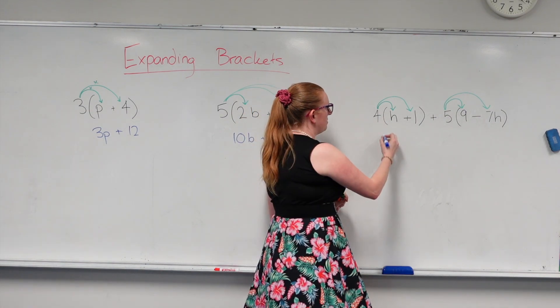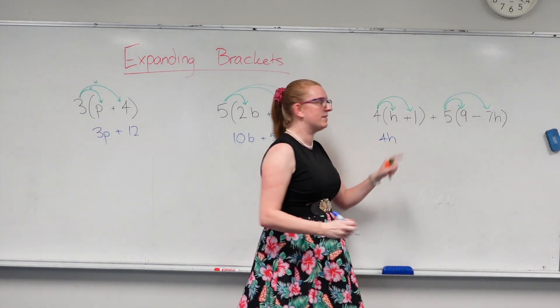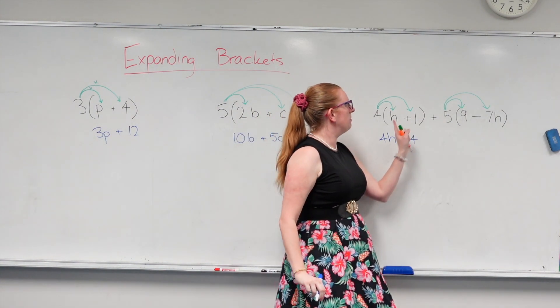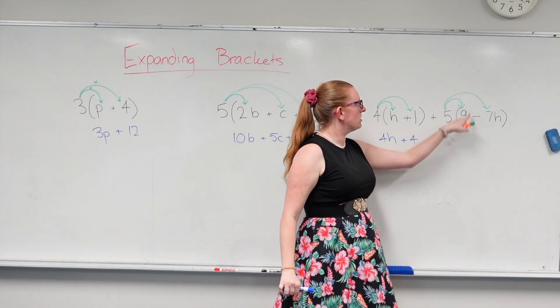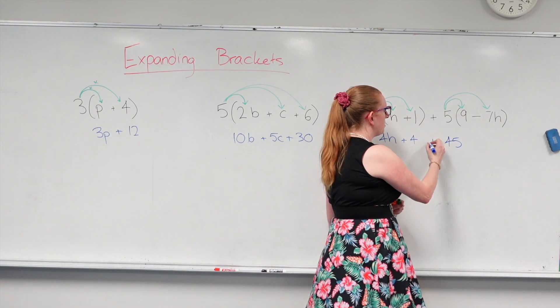So 4 times h gives me 4h. 4 times positive 1 gives me positive 4. So I put a little plus in there. Then I move over to the 5. So 5 times 9 is 45. And it's positive, so I put a plus.